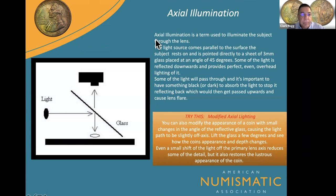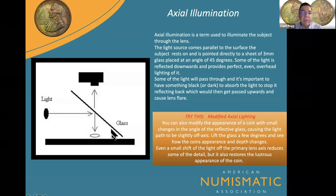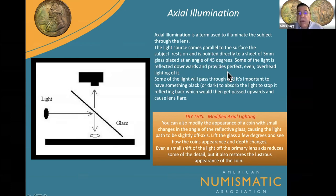Axial illumination is where the light is coming in and striking a glass panel set at a 45-degree angle. The light bounces down onto the item and reflects into the lens. There's also modified axial lighting where you can adjust the angle — maybe 40 or 35 degrees. It's one of the light sources used for highly reflective coins and works great with proof coins. The ANA was using this for their certification service — every old certificate with a coin image was photographed using this method.